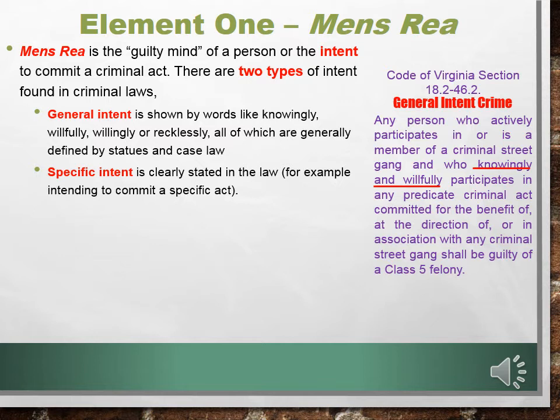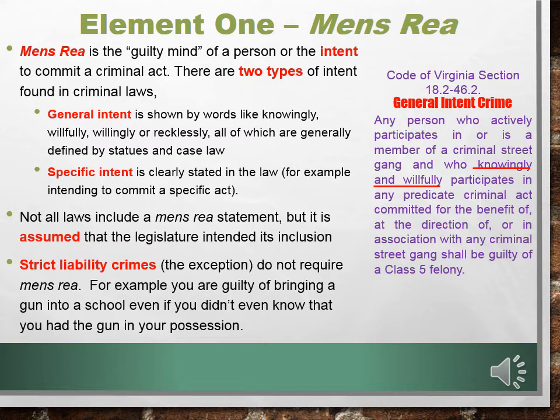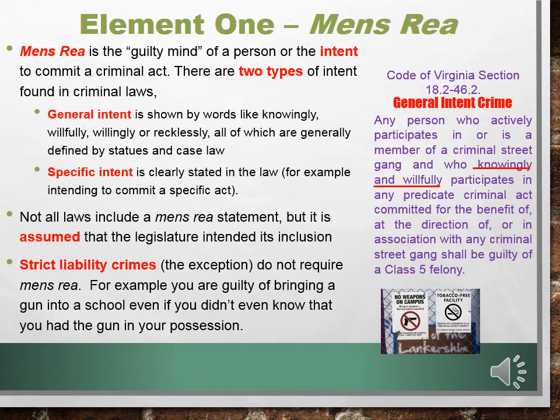Not all laws include a mens rea statement, but it is assumed that the legislature intended its inclusion. So if you see any mala in se, or inherently bad crime, you can assume the legislature wanted the prosecutor to prove the intent of the offender. Finally, strict liability crimes — the exception — do not require mens rea. For example, you are guilty of bringing a gun into a school even if you didn't know you had the gun in your possession. It doesn't matter whether or not you intended to bring it. You're just guilty. Go to the next slide.